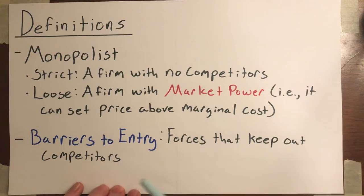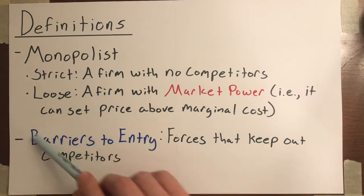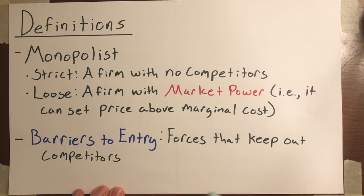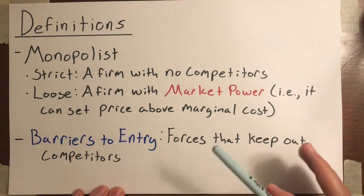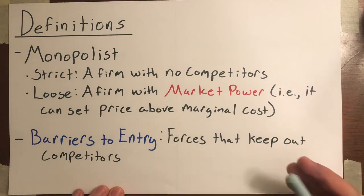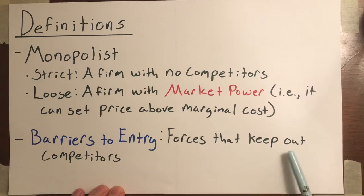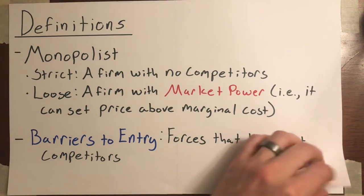The second definition we're interested in is barriers to entry. In order for a monopolist to stay a monopolist for a significant period of time, they have to have at least one barrier to entry. A barrier to entry is a force that keeps out competitors.